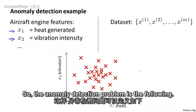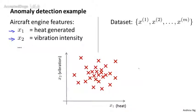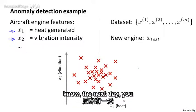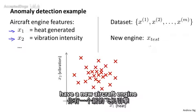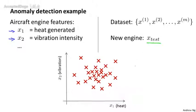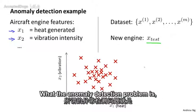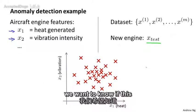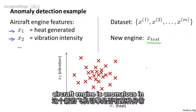So the anomaly detection problem is the following. Let's say that on the next day, you have a new aircraft engine that rolls off the assembly line. And your new aircraft engine has some set of features X test. What the anomaly detection problem is, we want to know if this aircraft engine is anomalous in any way.